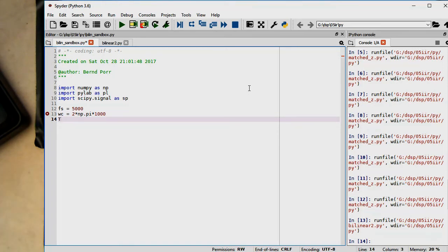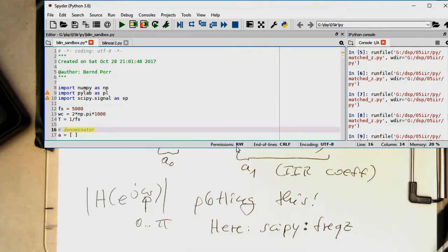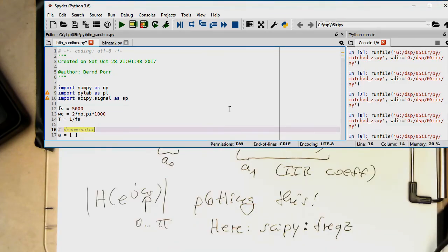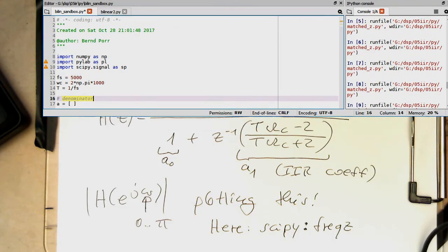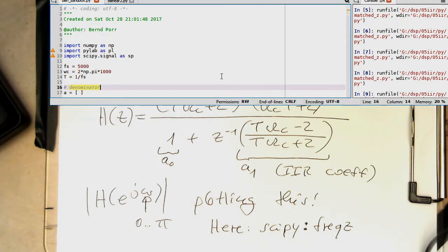And then our T is of course 1 over Fs. And so now we can just populate these coefficients here. So as I said, we use the frequency z command. And this, as we'd like to have the coefficients nicely lined up, so let's start with the denominator.